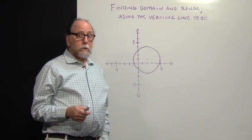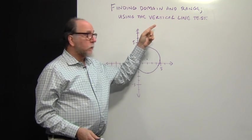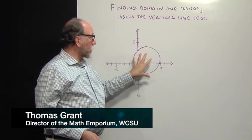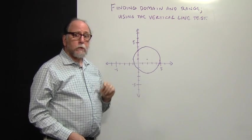In this segment, we're going to find domain and range of a relation, and then we'll look at relations on graphs and use the vertical line test to see if that relation is a function.